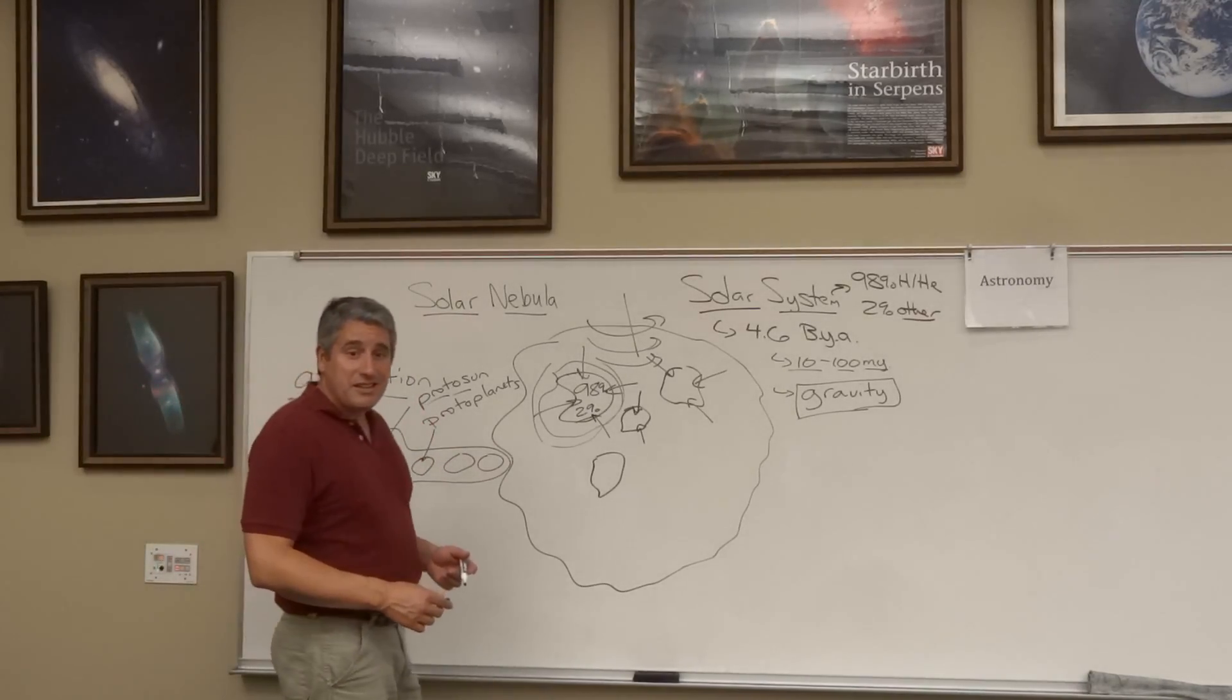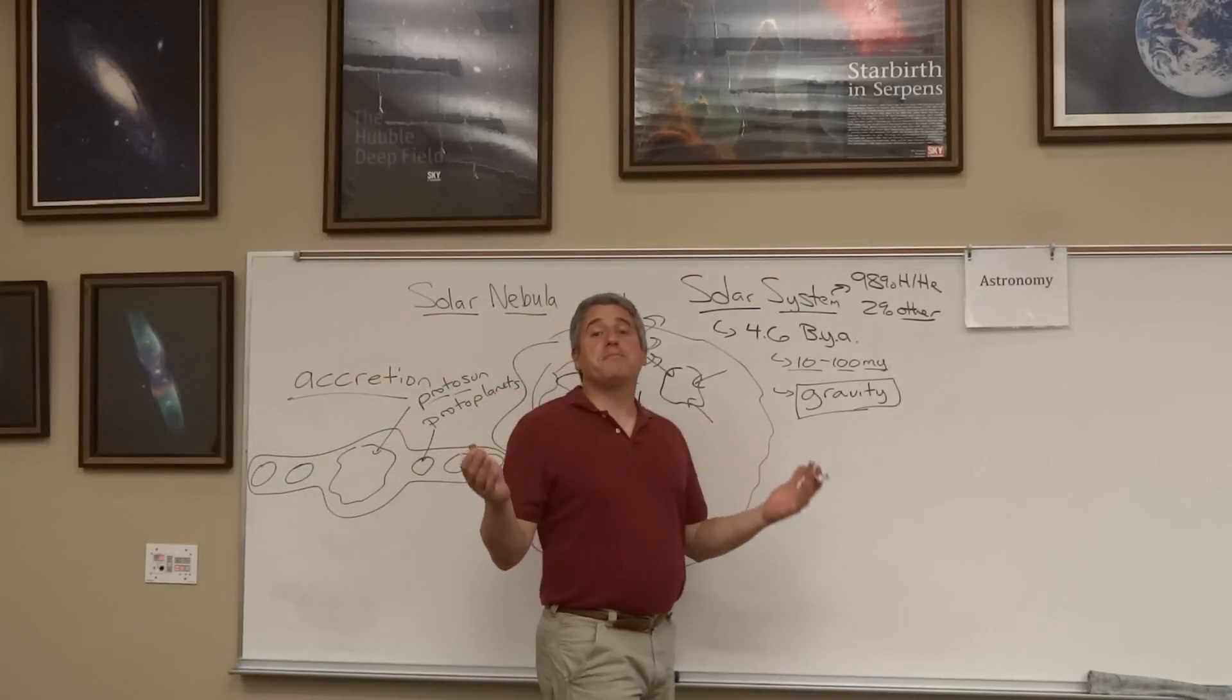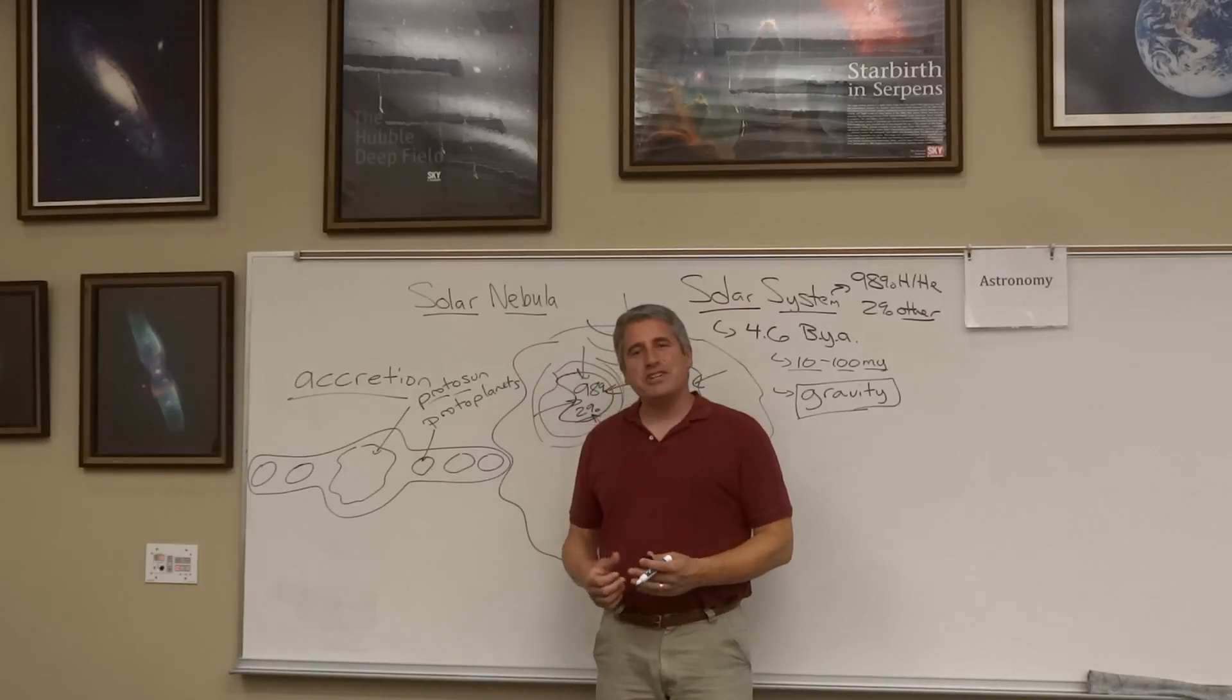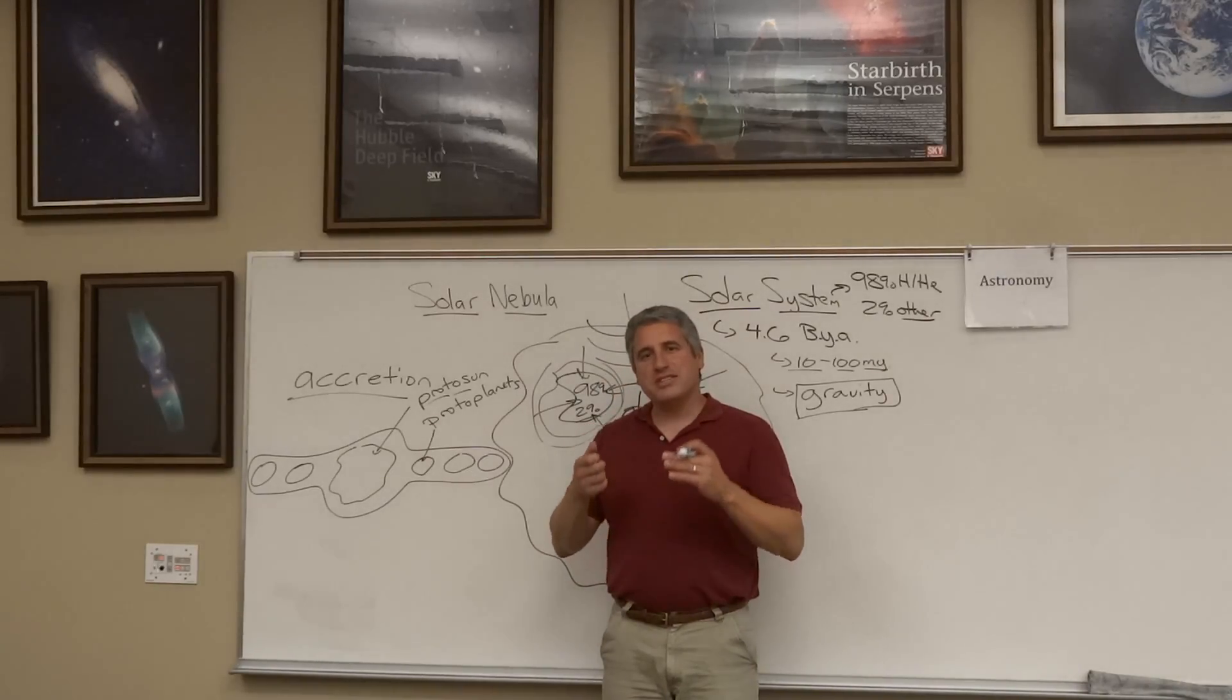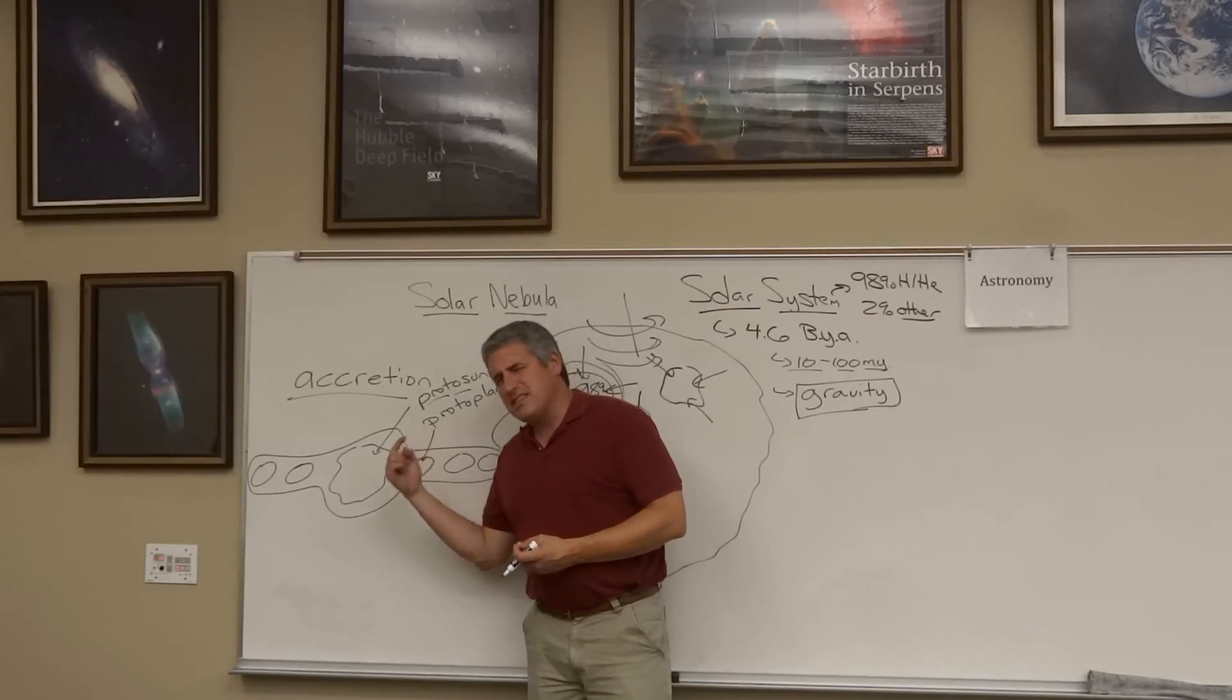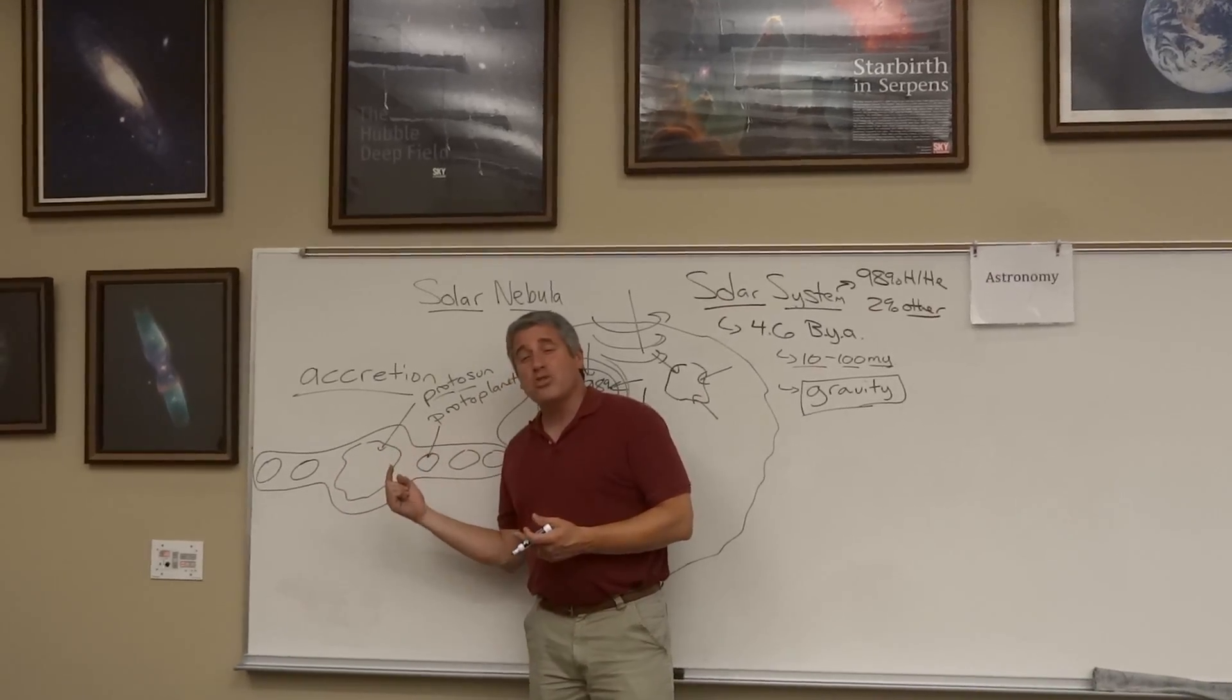There might be 40 or 50 proto-planets, but what happens to them is they collide and eventually the stable ones are the ones that survive. The ones in near circular orbits, somewhat elliptical orbits, but orbits that don't cross over each other.